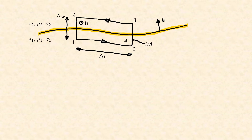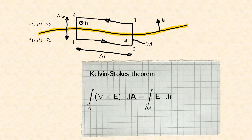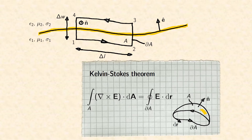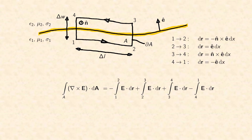Now we are prepared for a mathematical trick from vector calculus. The Kelvin-Stokes theorem is the two-dimensional form of the universal Stokes theorem. It tells us that the integral of the curl of a vector field on a surface A is equal to the closed-line integral of the field along the perimeter del A of the area. The normal vector of the surface and the right-hand convention define the direction of the line integral. E may be any vector field, but we suppose that it is in fact the electric field. In our case the closed-line integral of the Kelvin-Stokes theorem leads to a sum of four integral terms. The sign of each term needs to match the direction of the integration path.